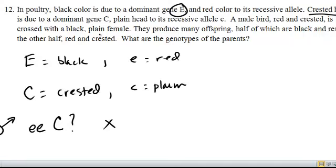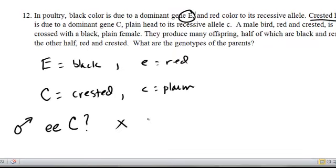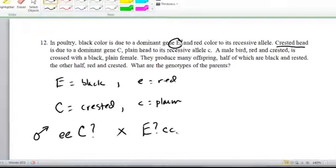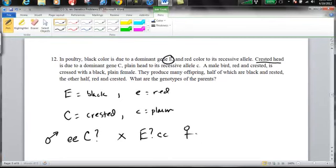He's going to be crossed with a black, plain female. Now, she has at least one dominant allele, and if she's plain, she has lowercase c, lowercase c, or homozygous recessive. Okay, so that's the female symbol.